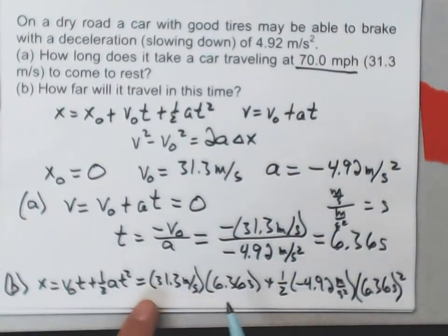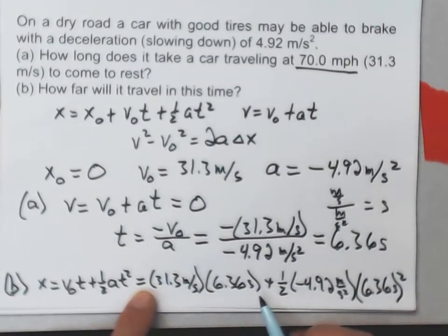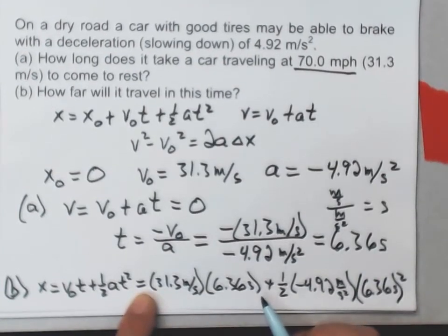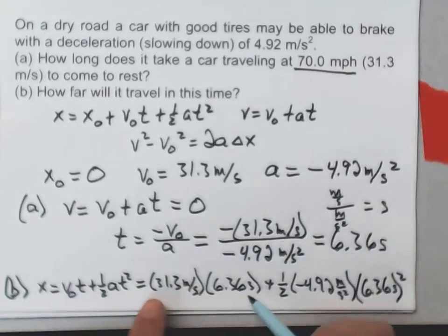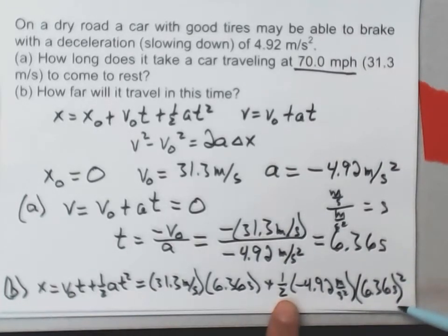Something to notice here. This v naught t term is how far the car would go if it was not accelerating. This term here, which ends up being negative, gets subtracted away from this because the car is coming to rest.